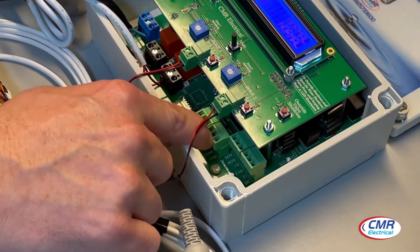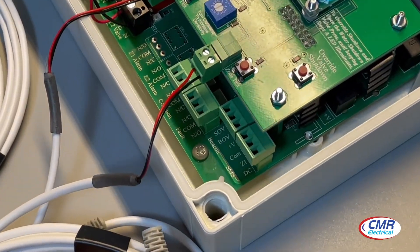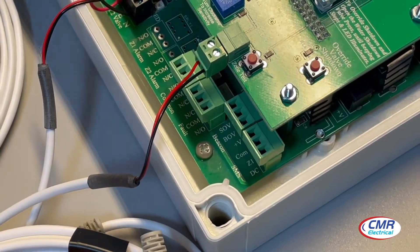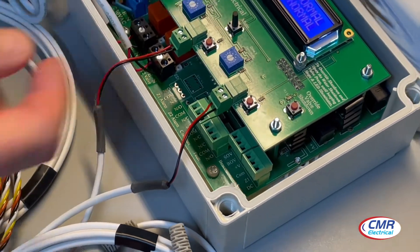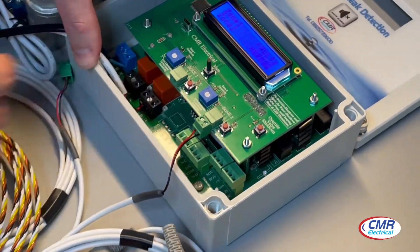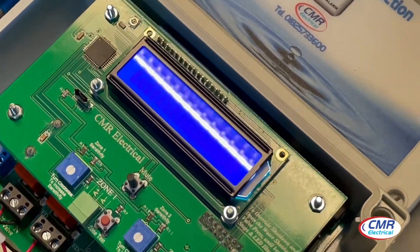Next to that one, you have the fault volt-free contact. That is for when the cable gets damaged. I'll illustrate it by pulling out the terminal in that zone. You can see it says zone 1 fault.